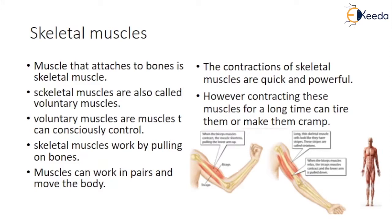Skeletal muscles: muscle that attaches to bones is skeletal muscle. Skeletal muscles are also called voluntary muscles. Voluntary muscles are the muscles that we can consciously control, and these muscles work by pulling on bones. Muscles can work in pairs and move the body. The contractions of skeletal muscles can be weak or powerful. However, contracting these muscles for a long time can tire them or make them cramp.